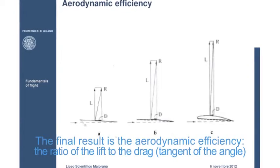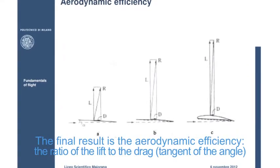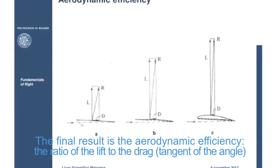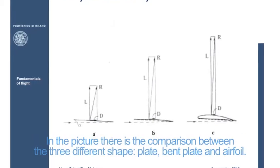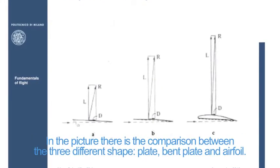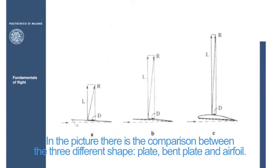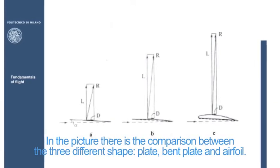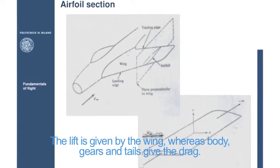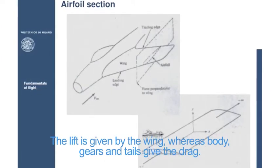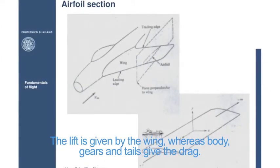The final result is the aerodynamic efficiency, the ratio of the lift to the drag, tangent of the angle. In the picture there is the comparison between the three different shapes: plate, bent plate and airfoil. The lift is given by the wing, whereas body, gears and tails give the drag.